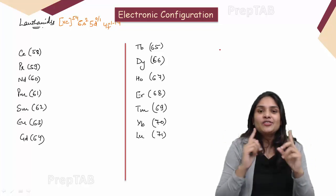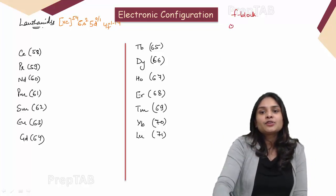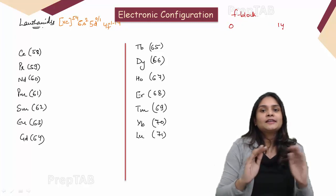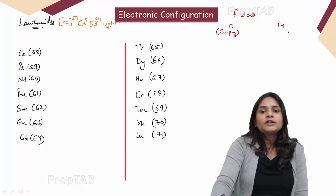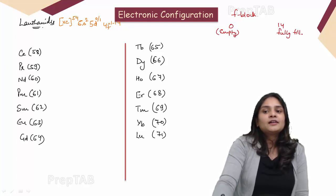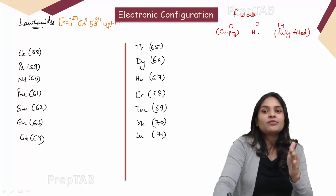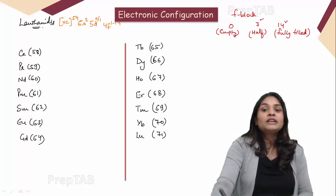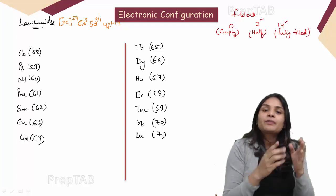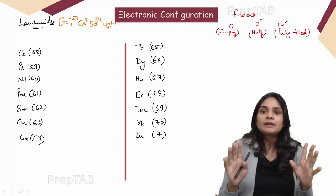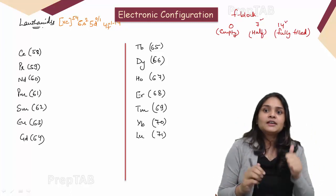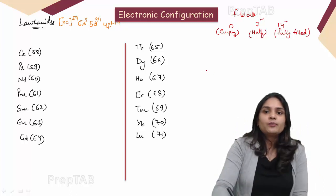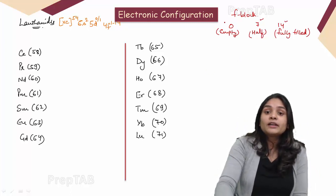In the f sub-shell, filling goes from 0 to 14 electrons. An empty f sub-shell is 0, half-filled is 7, and fully filled is 14. Both half-filled (f⁷) and fully-filled (f¹⁴) are very stable configurations — this is an important rule to remember.